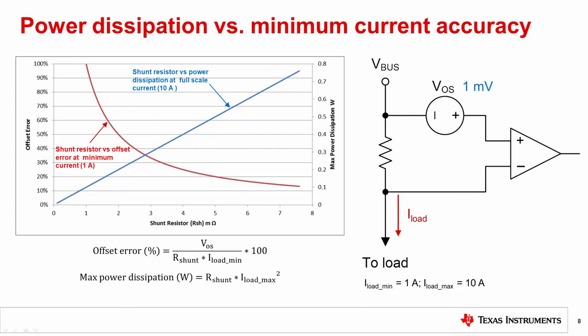Finding the optimal value for the shunt resistor requires factoring both the accuracy requirement of the application and allowable power dissipation into the selection of the resistor. Let's continue working through this example.